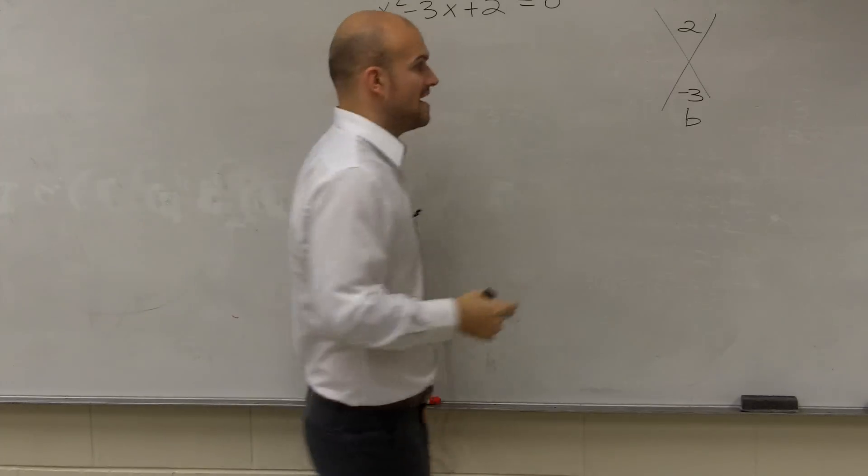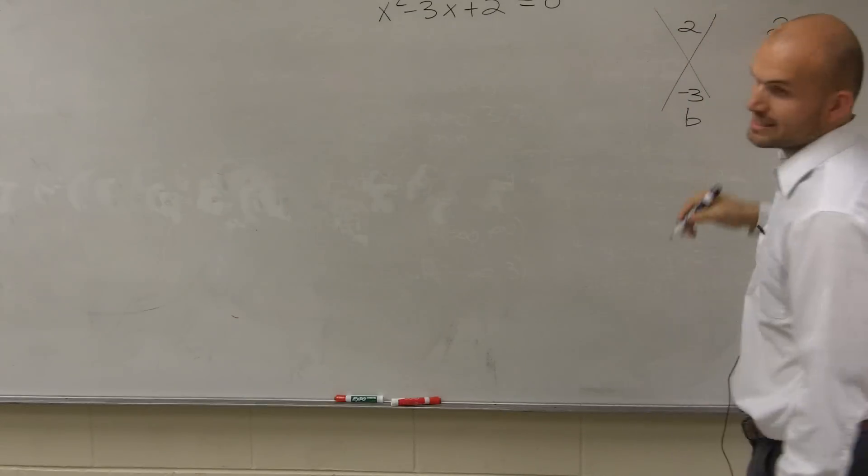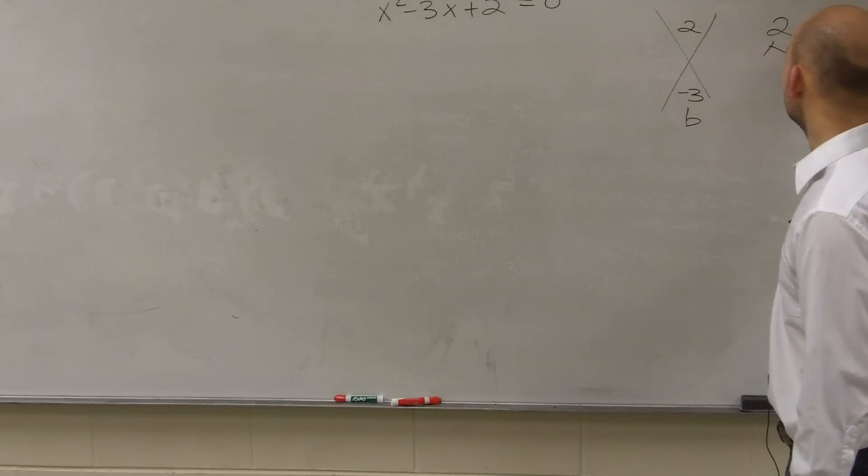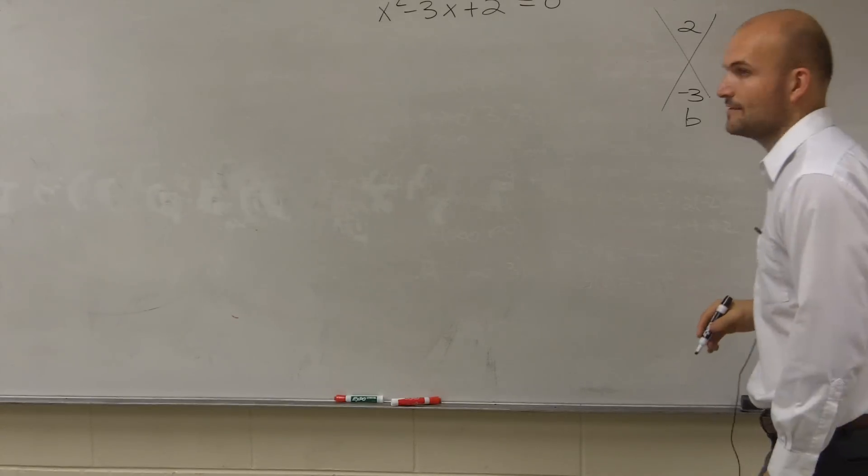So now I need to write down the factors of 2 because I need to say what two numbers multiply to give me 2, but then add to give me negative 3.